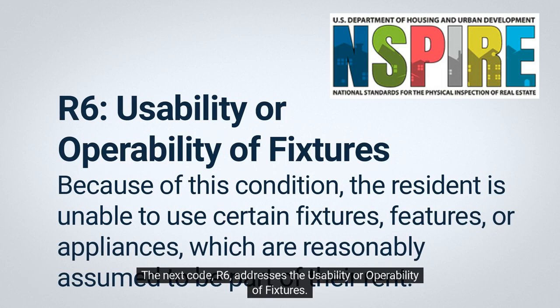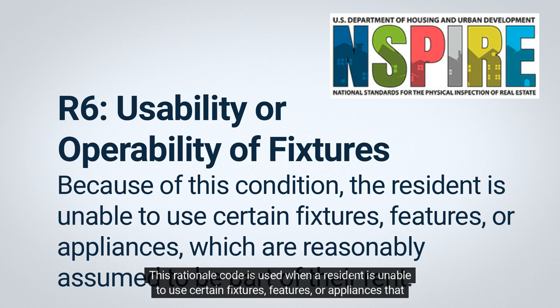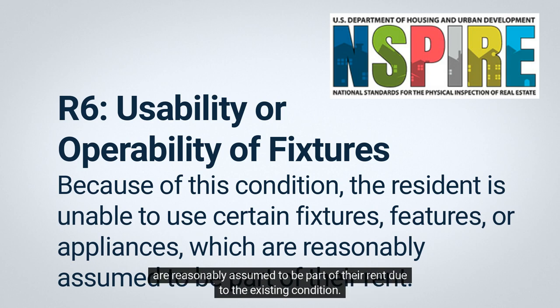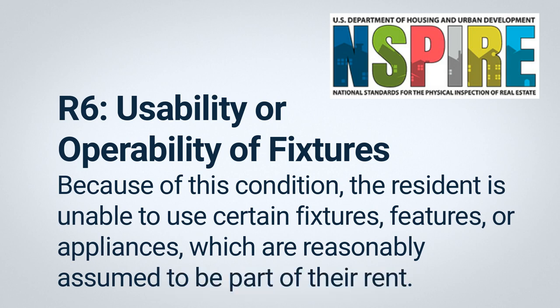The next code, R6, addresses the usability or operability of fixtures. This rationale code is used when a resident is unable to use certain fixtures, features, or appliances that are reasonably assumed to be part of their rent due to the existing condition.